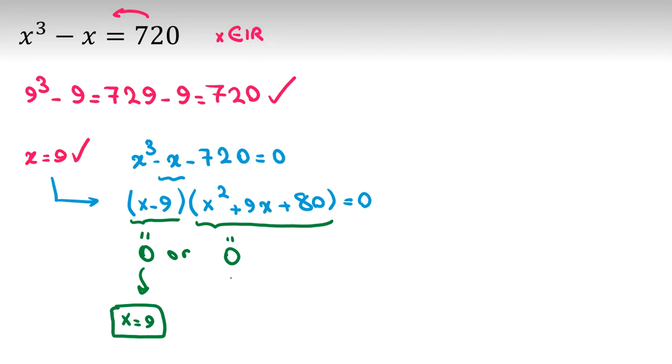In the second part, x squared plus 9x plus 80. Let me write it here. x squared plus 9x plus 80 equal to 0. Try to find answers for this.